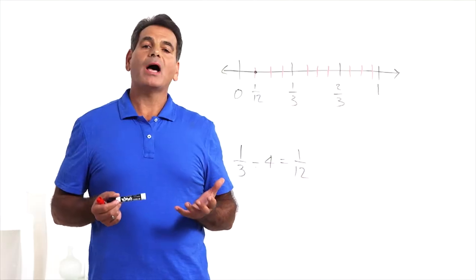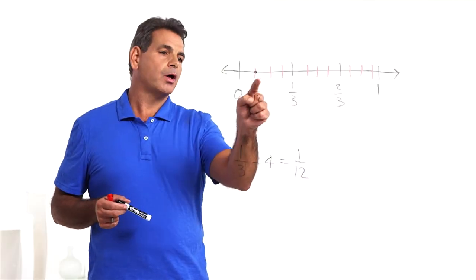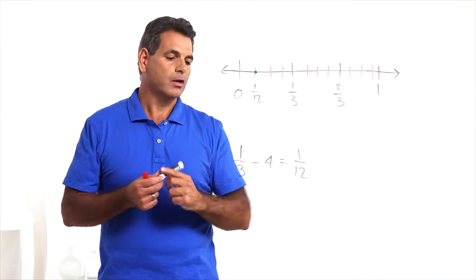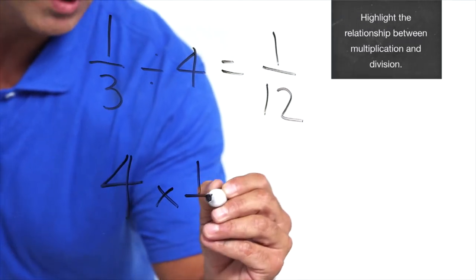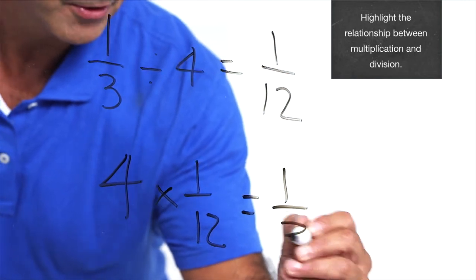So how many one-twelfths in one-third? 1, 2, 3, 4. So four times one-twelfth equals one-third.